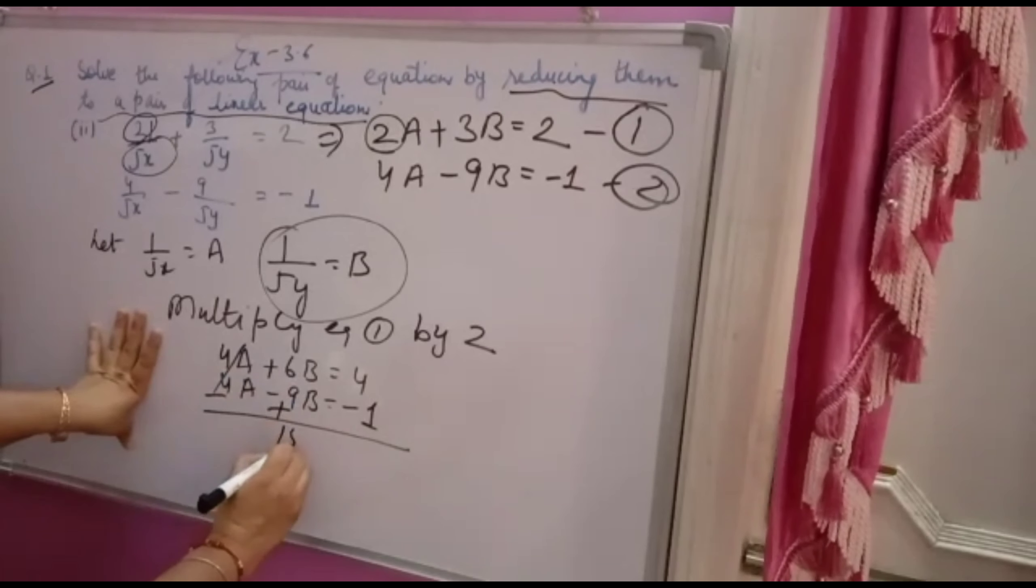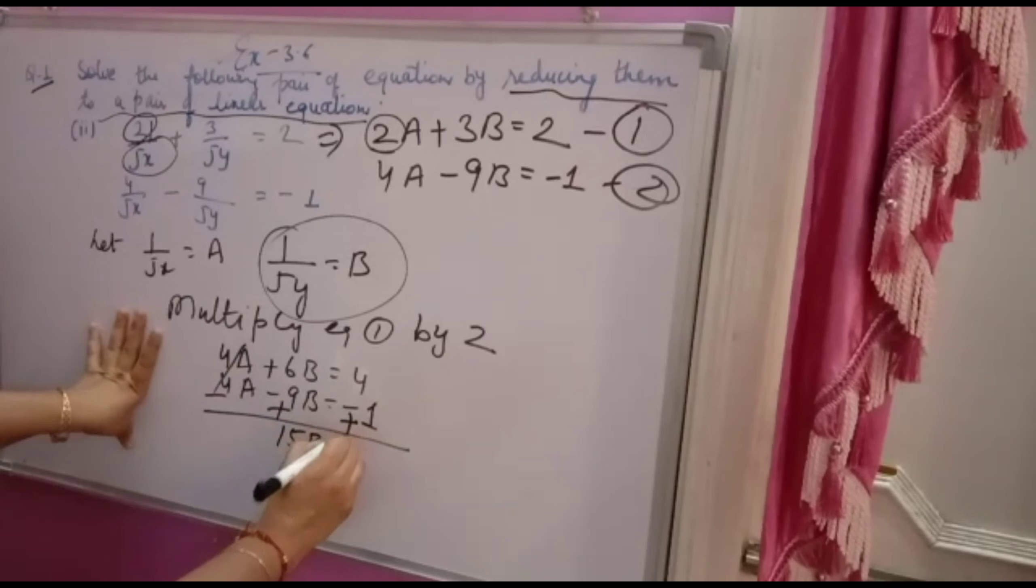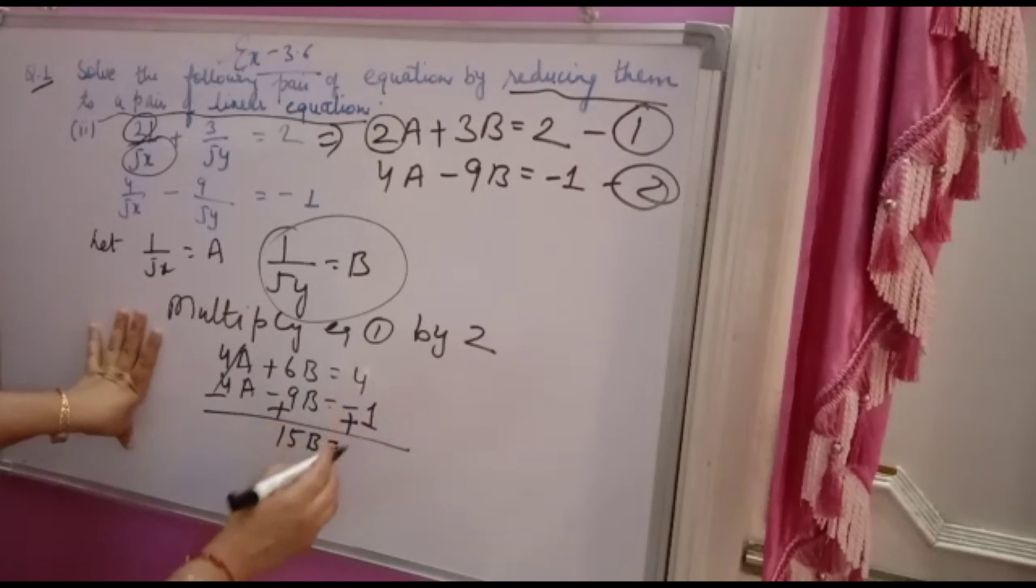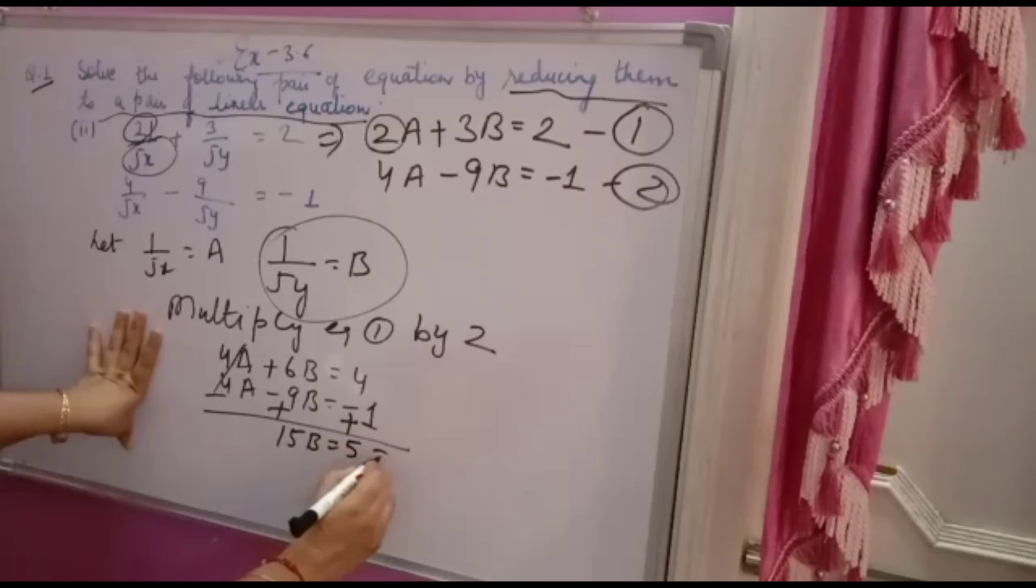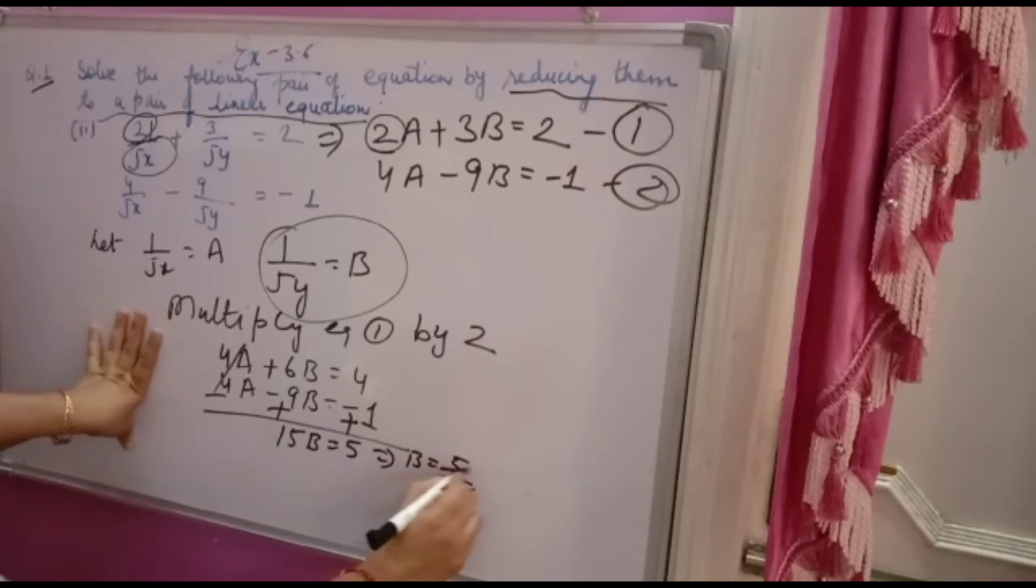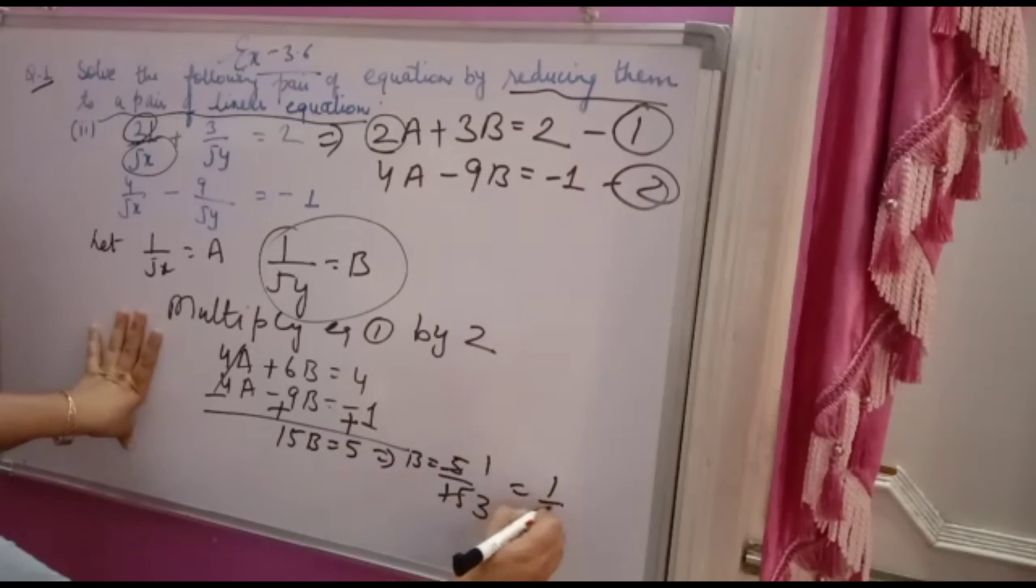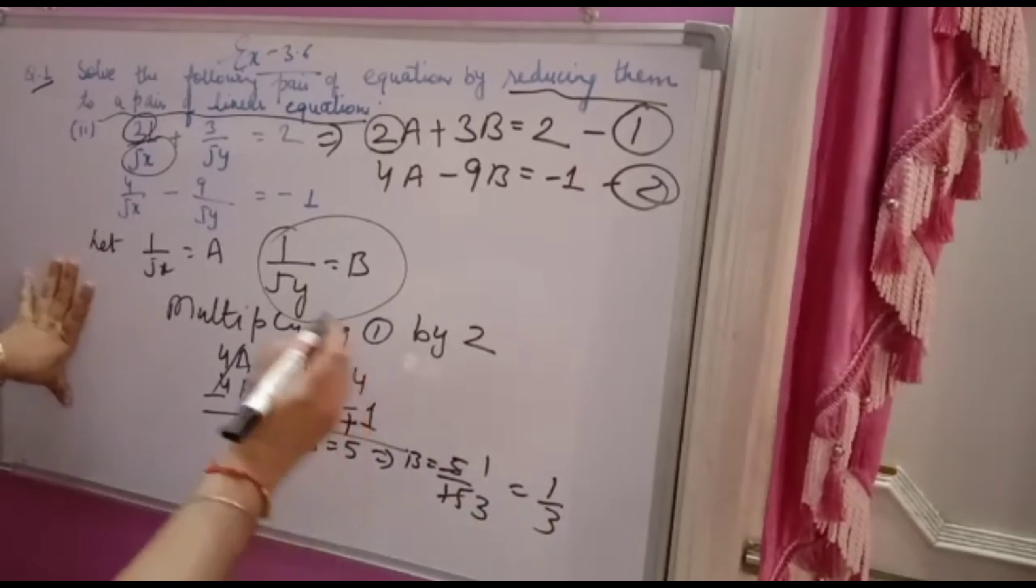6 plus 9 is 15B, and here also plus sign. The sign will change, so 4 plus 1 is 5. So B will come 5 over 15, that is 1 by 3. B came 1 by 3.